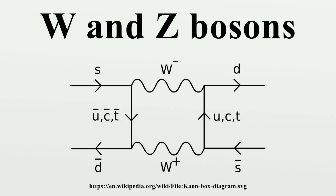The Z boson is not involved in the absorption or emission of electrons and positrons. The Z boson mediates the transfer of momentum, spin, and energy when neutrinos scatter elastically from matter, something that must happen without the production or absorption of new charged particles. Such behavior is seen in bubble chambers irradiated with neutrino beams.